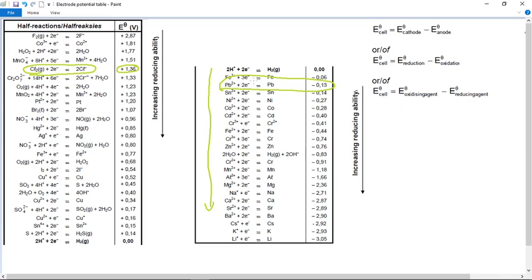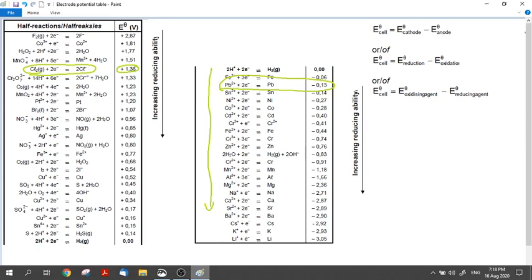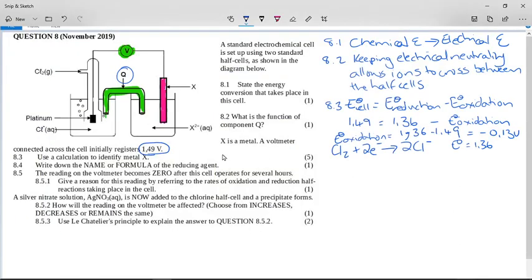So we now need to finish off here and say metal X equals Pb, or we can say it is lead if we didn't know Pb plumbum was lead.